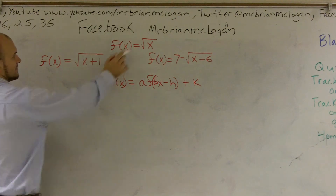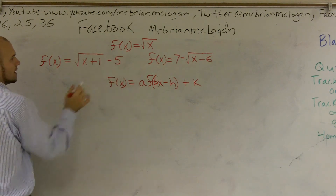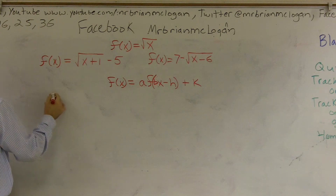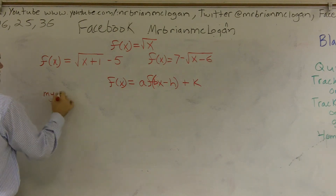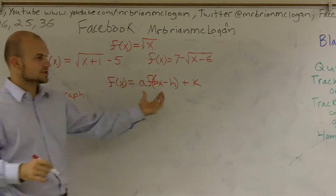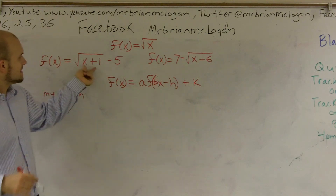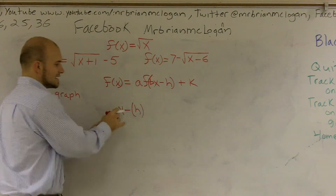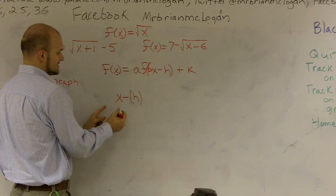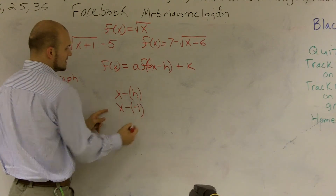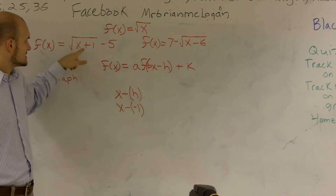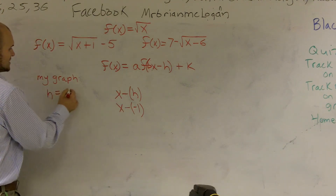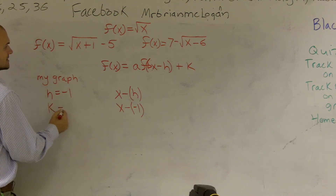Looking at this first function, I have my h is equal to negative 1 and my k is equal to negative 5. Remember, the formula uses x minus h. So if x minus h gives us x minus a negative 1, that's the same thing as x plus 1. Therefore, my value of h is negative 1, so h equals negative 1, and k equals negative 5.